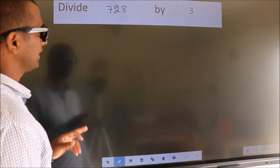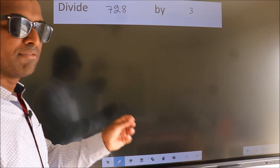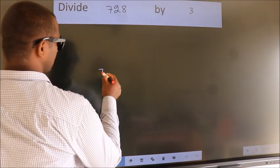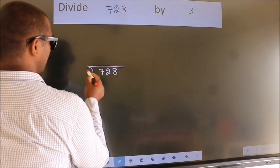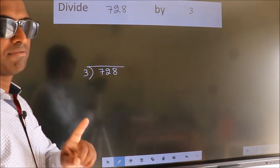Divide 728 by 3. To do this division, we should frame it in this way. 728 here, 3 here. This is your step 1.